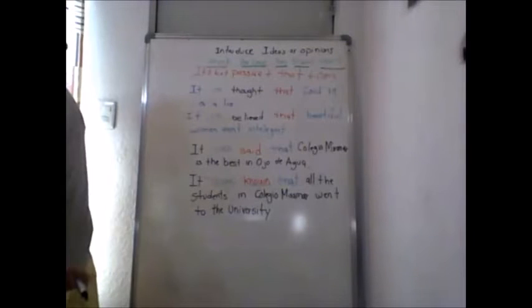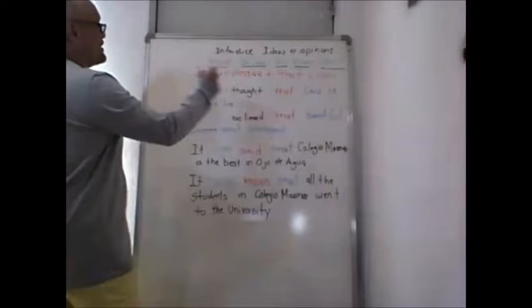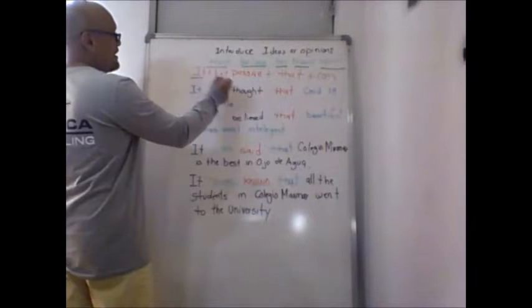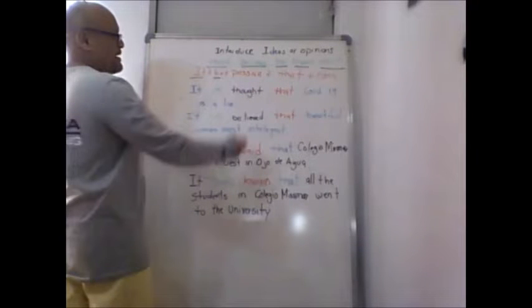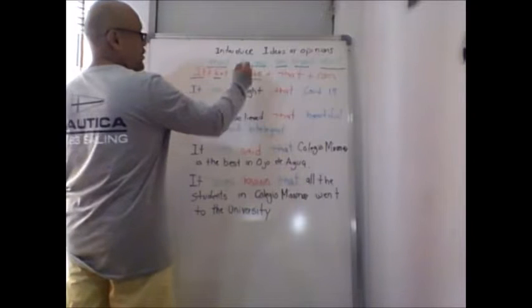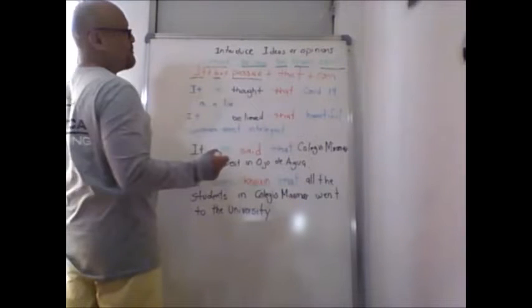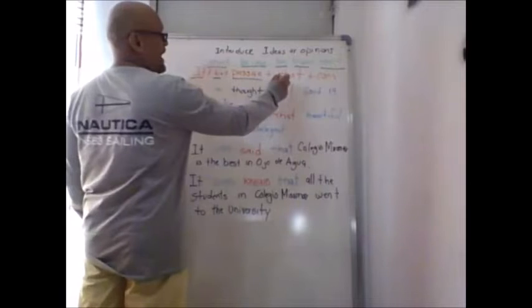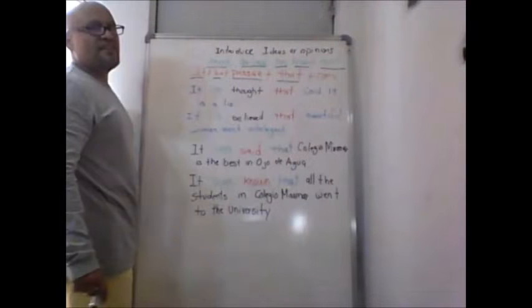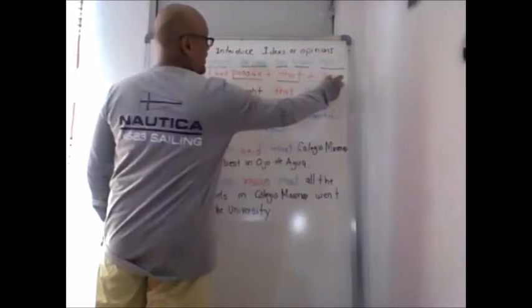These are the verbs that we can use to give our opinions. And this is the structure: It plus the verb to be plus the passive word. We change this into past participle, and then the clause that plus the complement.